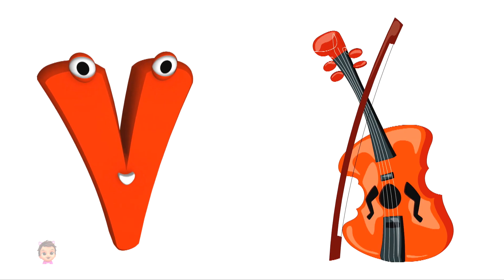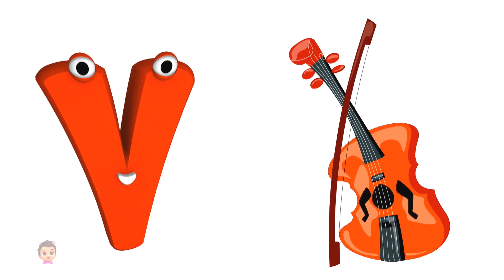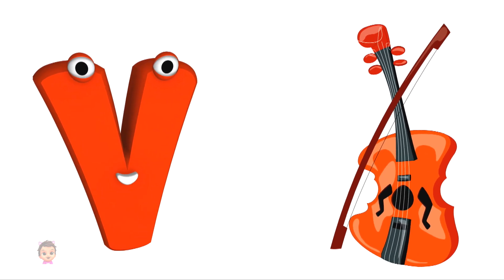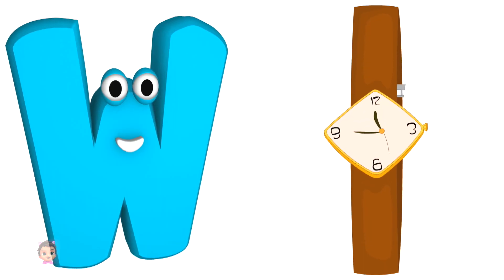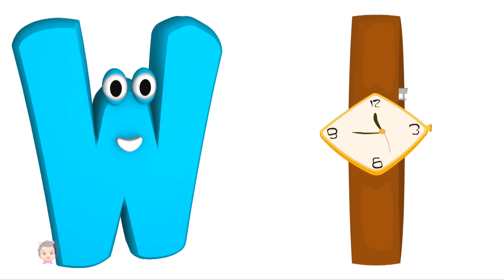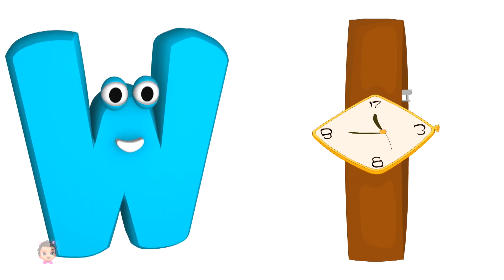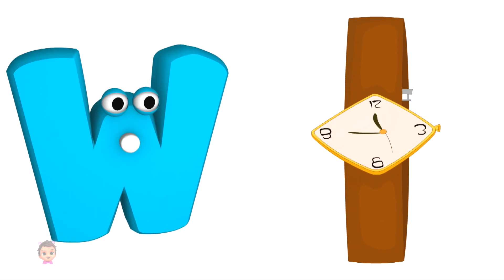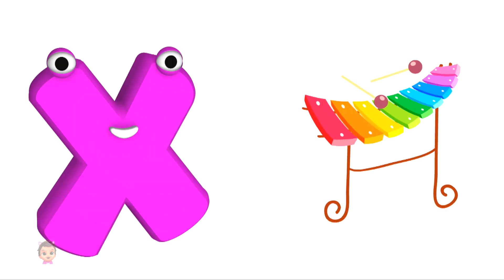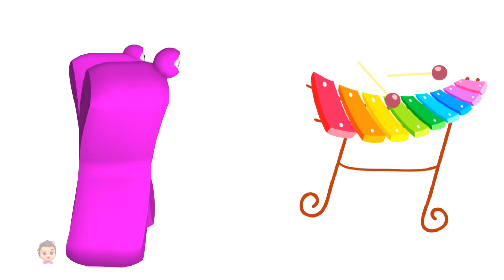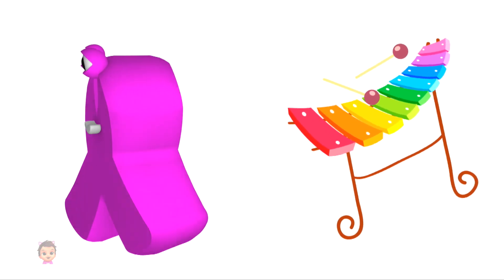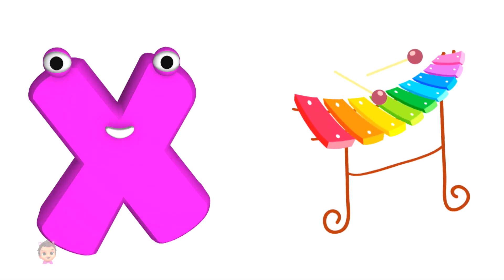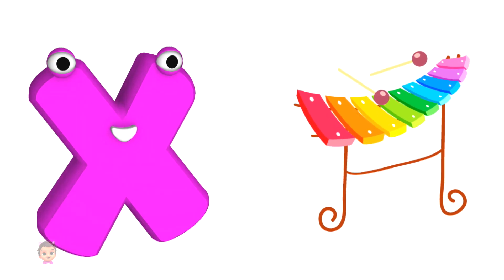V is for violin, vuh, violin. W is for watch, wuh, watch. X is for xylophone, zuh, xylophone.